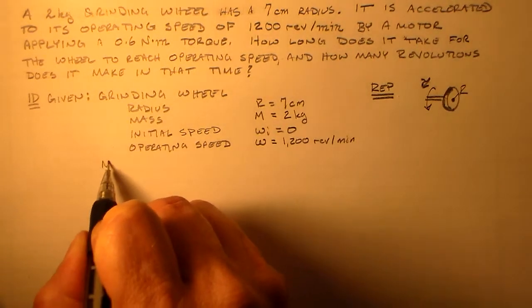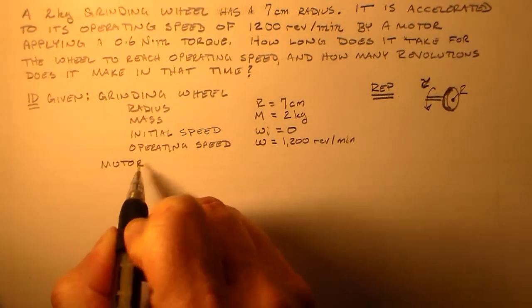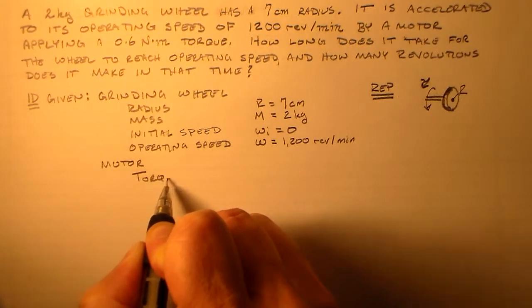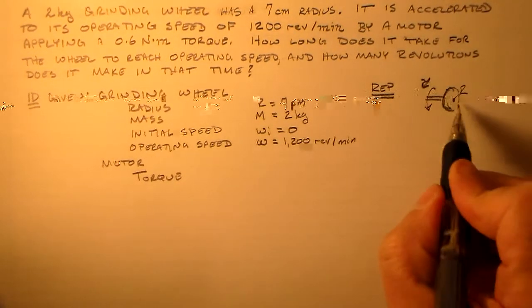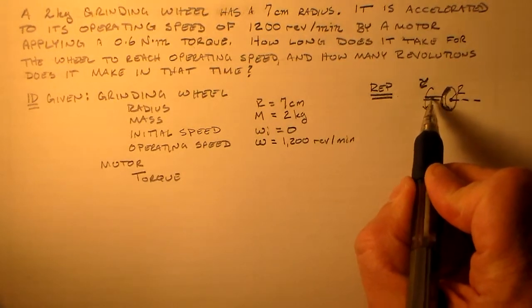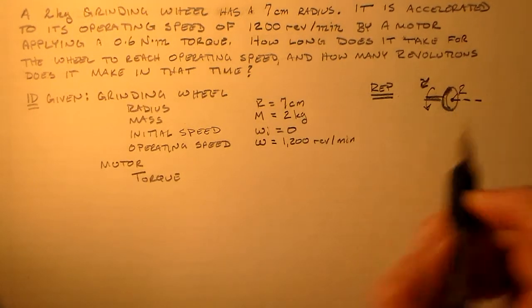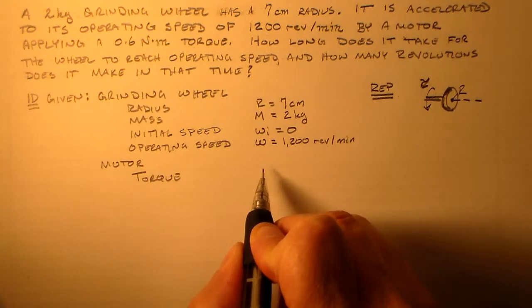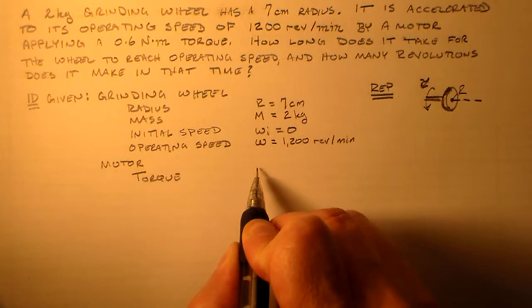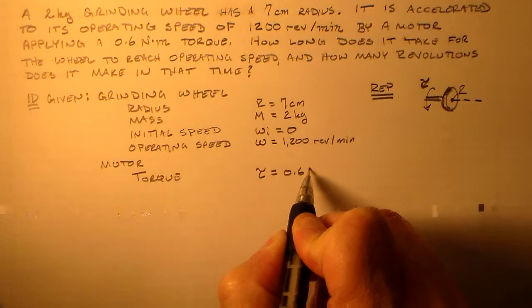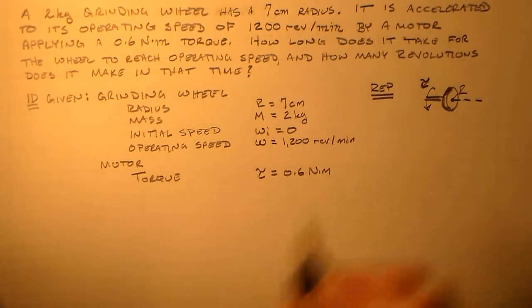The mass, I'll use a capital M for mass, and that is 2 kilograms. The radius is r equals 7 centimeters. That's what I know about the wheel. I also know something about the motor, and that's going to apply a torque around this axis here, around the axis of this axle. And that'll have some torque of 0.6 newton meters.